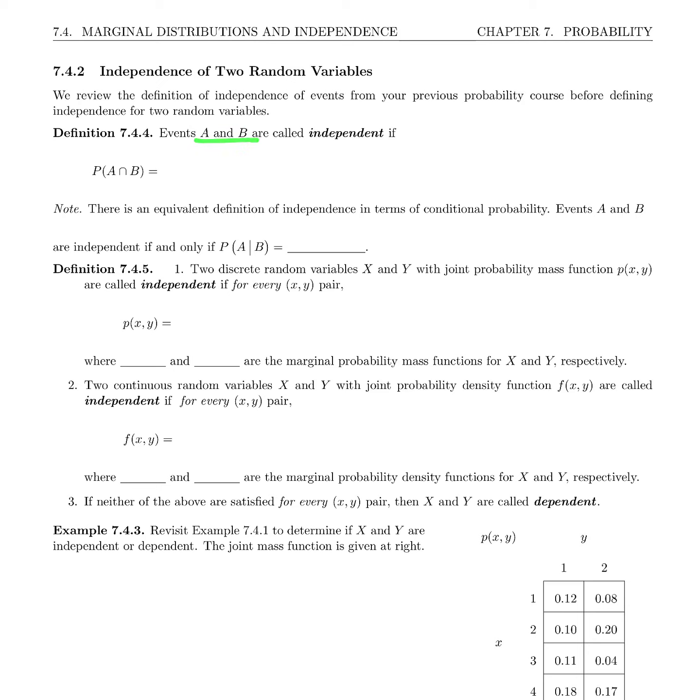Events A and B are called independent if the probability of A and B, which is the probability of A intersect B, is the probability of A times the probability of B. And just a little note that there is actually an equivalent definition of independence in terms of conditional probability. Events A and B are independent if and only if the probability of A given B is just the probability of A. But this is the definition that we are going to base ourselves on for the independence of two random variables.